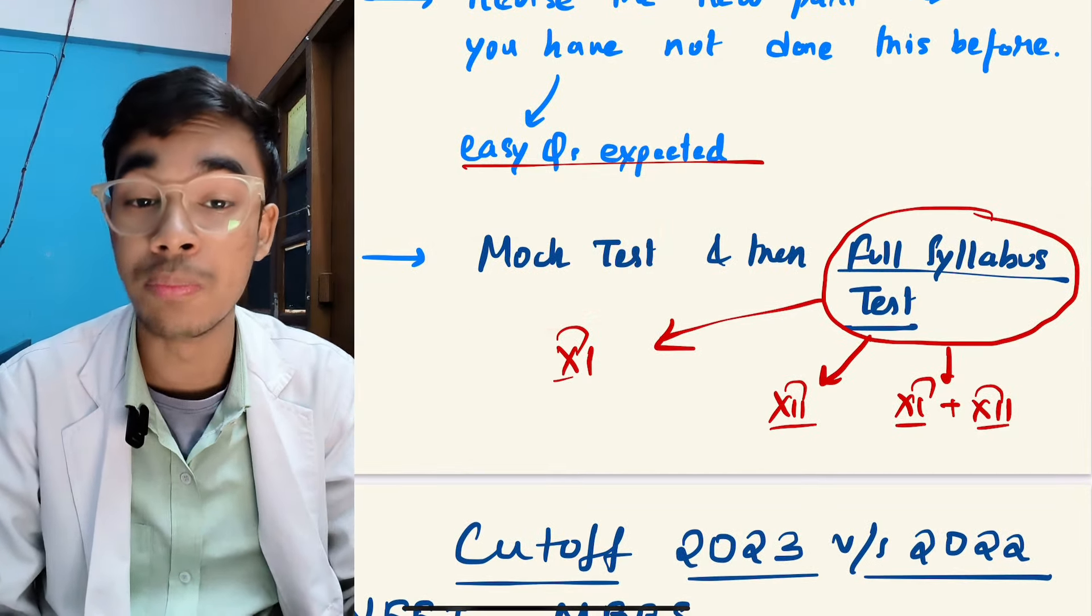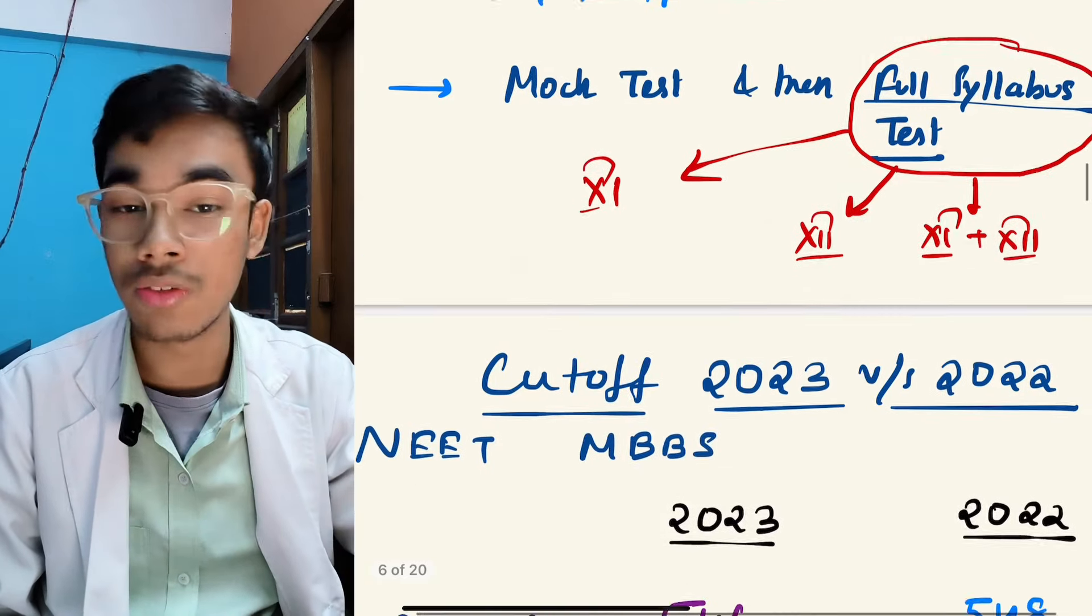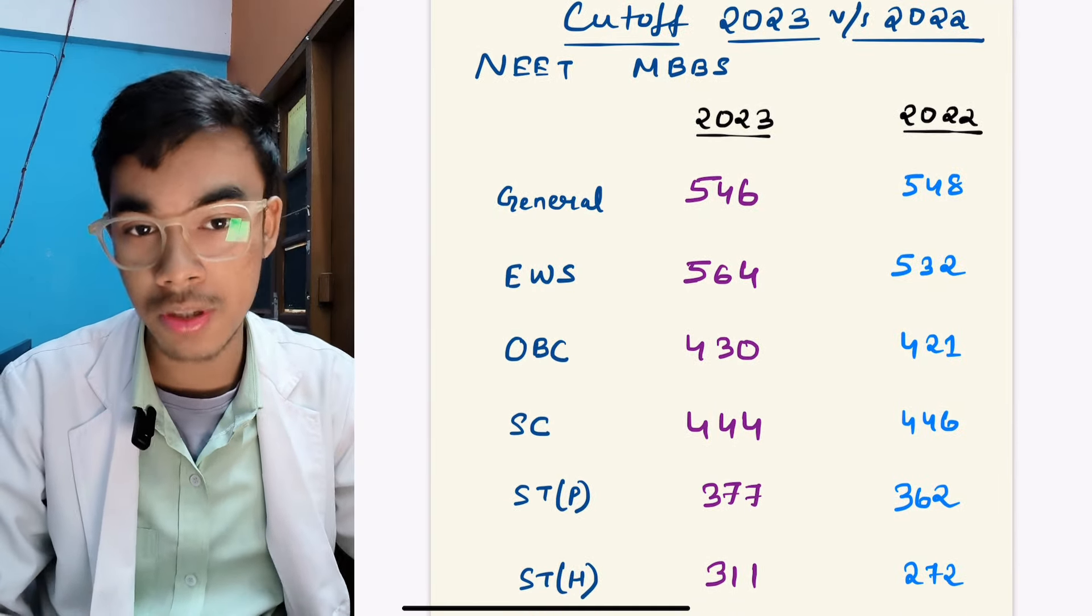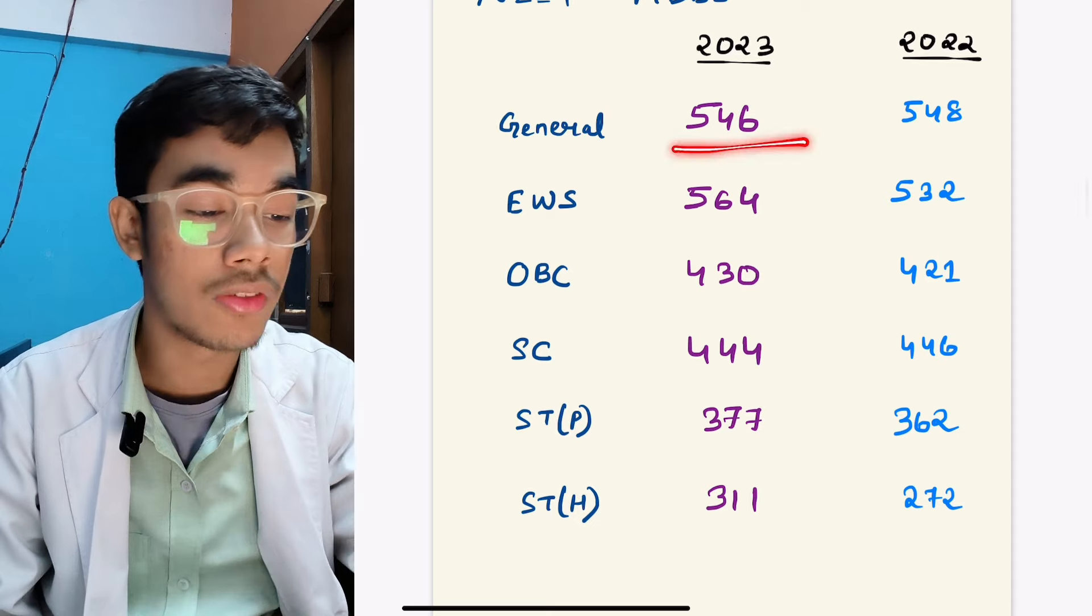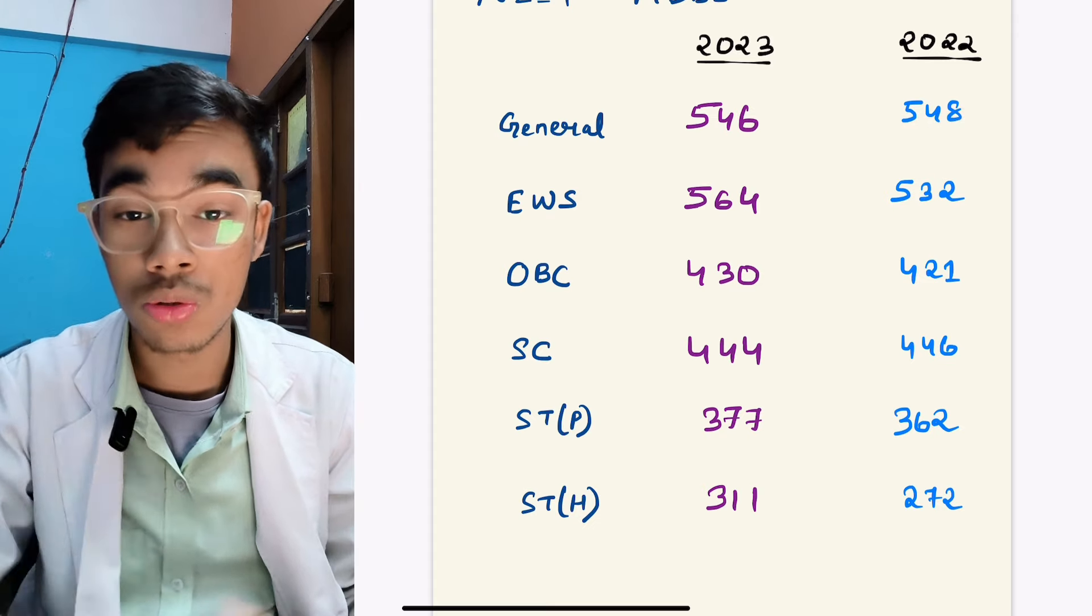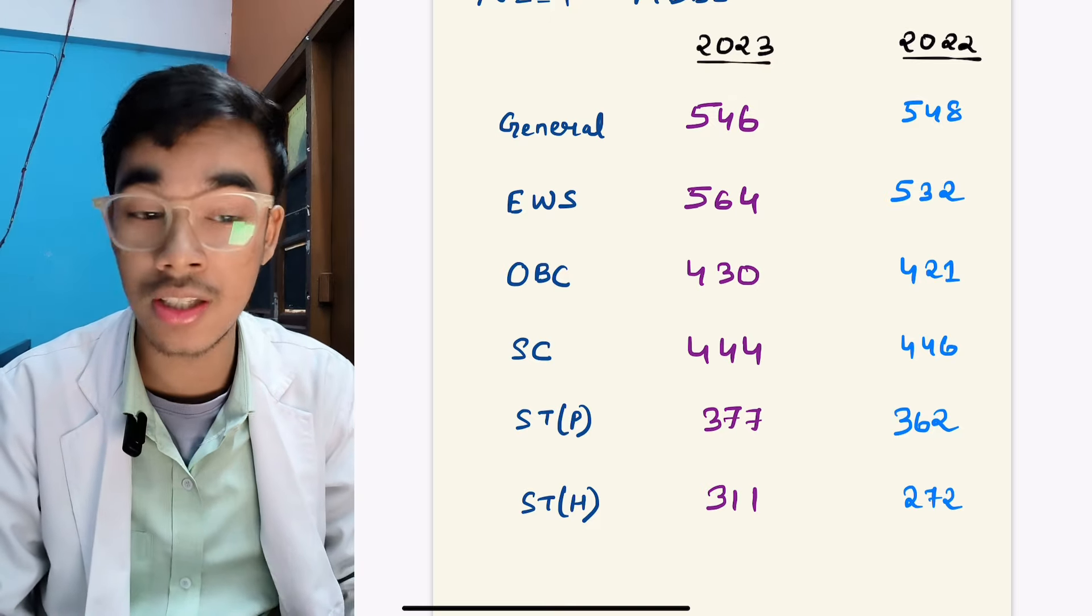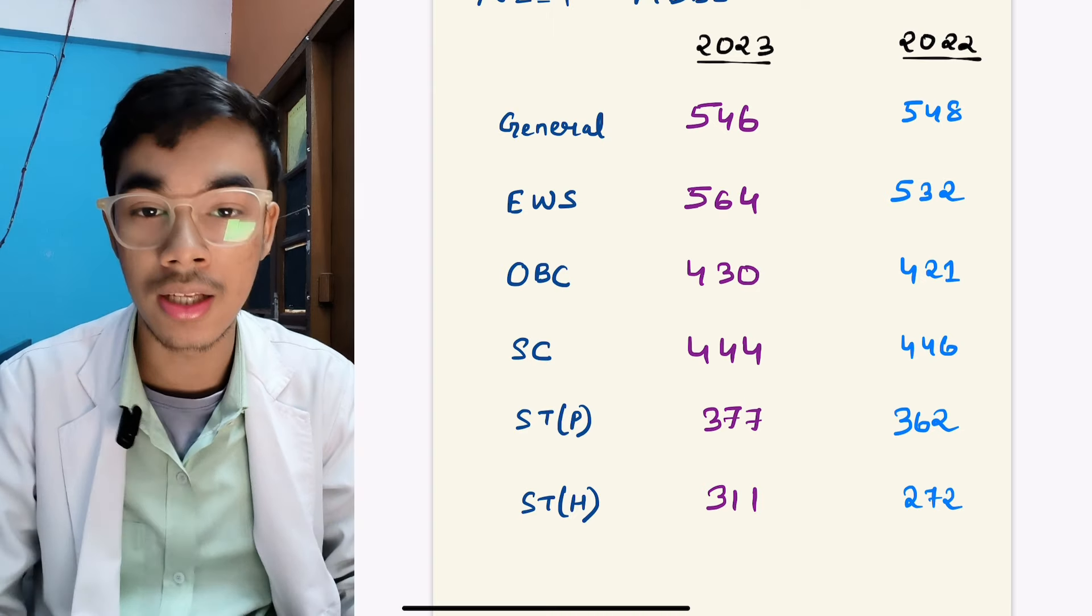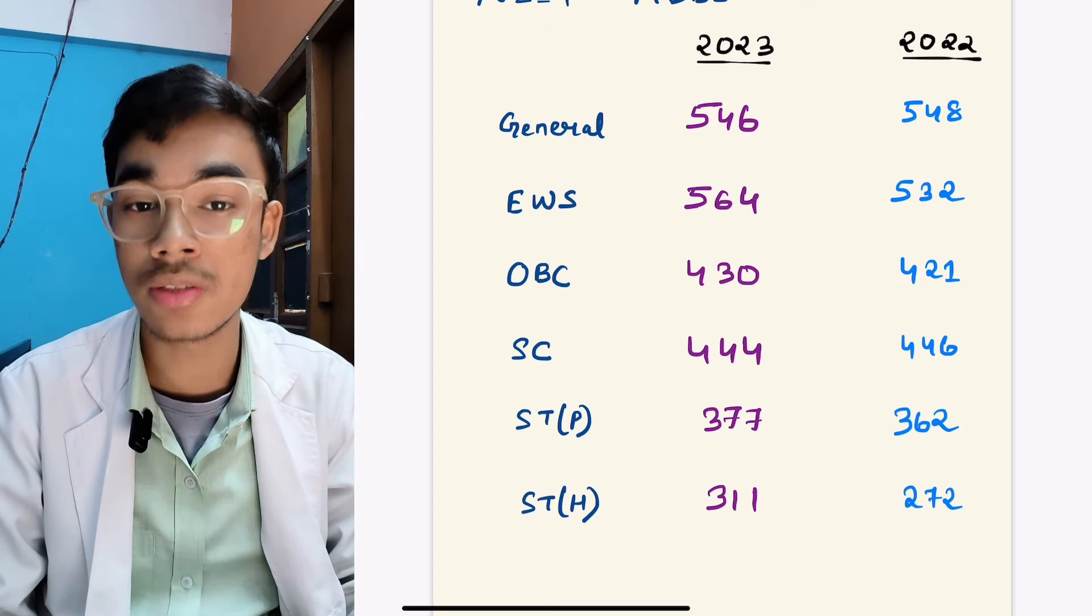Full syllabus class 11 and class 12 tests are most important right now. If we talk about the video, looking at 2023 and 2022 trends, we will understand the cutoff. This year 546 cutoff, last year it was a little less in 2022 at 548, even though the seats increased by 300 this year.